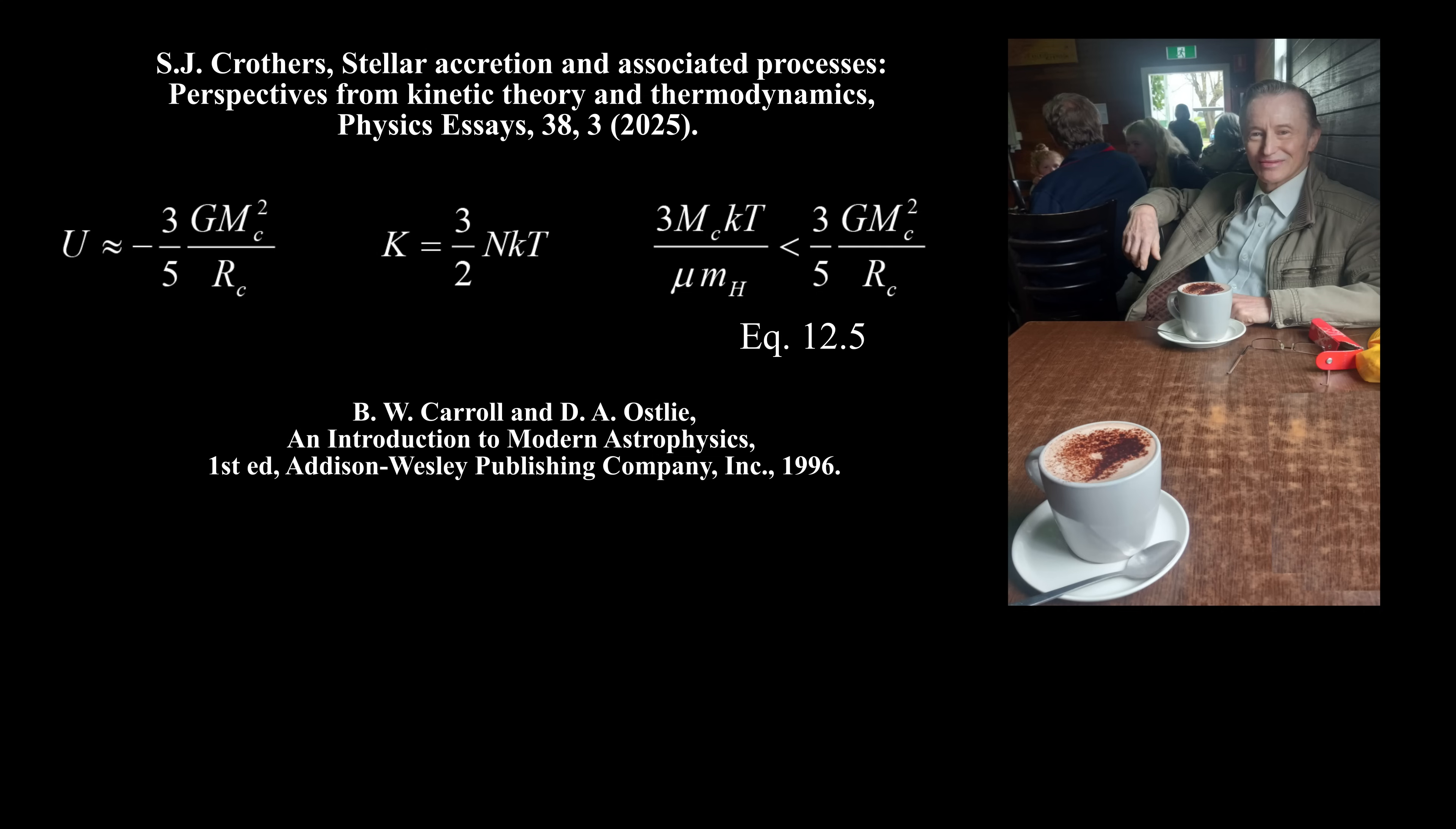Thirdly, solving their expression for temperature gives this inequality, which reveals that Carroll and Ostlie assign a temperature to gravitational potential energy, when in reality potential energy has no temperature. Fourthly, gases never compress themselves by any means. Consequently, their inequality 12.5 for the condition of self-compression of a gas is false.